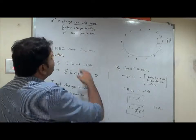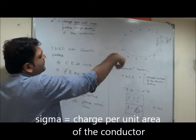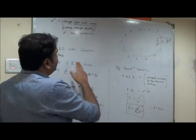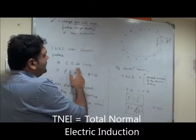Now, let sigma, small sigma, be the surface charge density of the conductor or charge per unit area of the conductor. TNI over the Gaussian surface, TNI will be epsilon E DS cos theta.